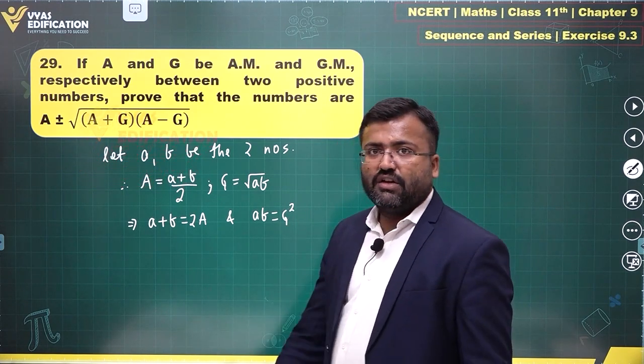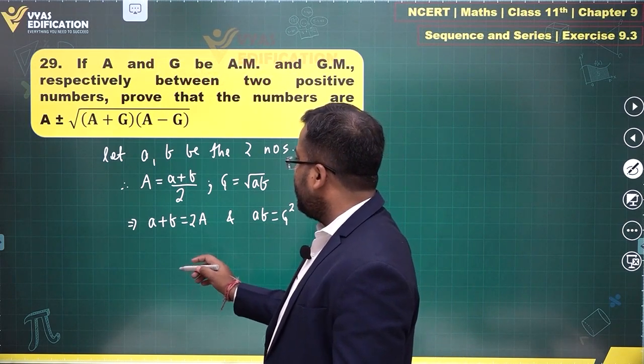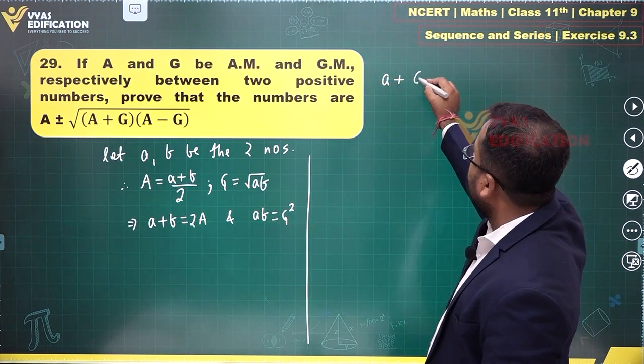Let's eliminate one of the numbers a or b and find the other. We have b = G²/a, so a + G²/a